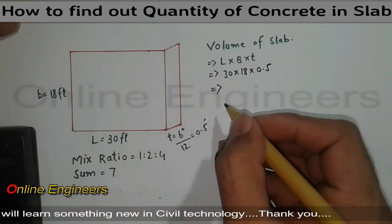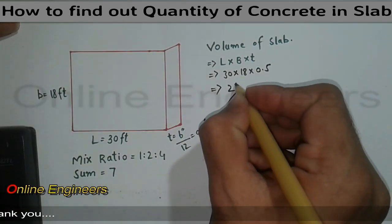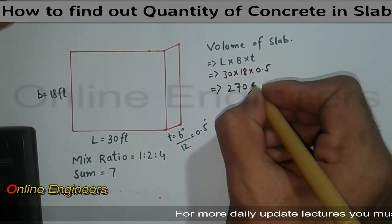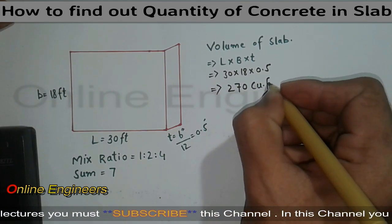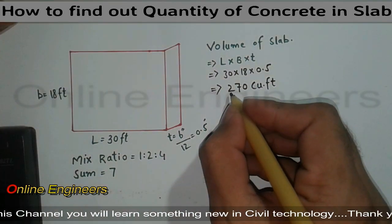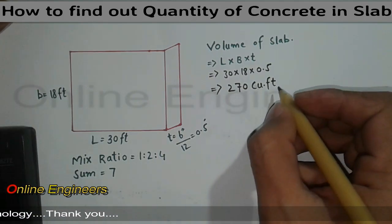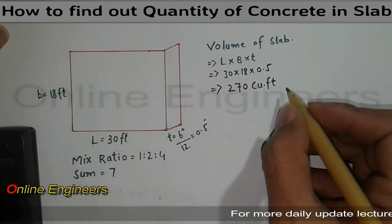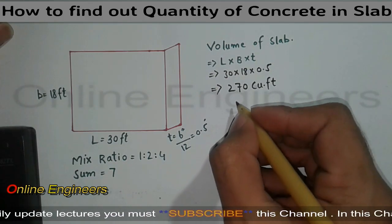So the volume is 270 cubic feet. So this is wet volume. Now I want to convert it to dry volume. For dry volume, simple, multiply by 1.54.